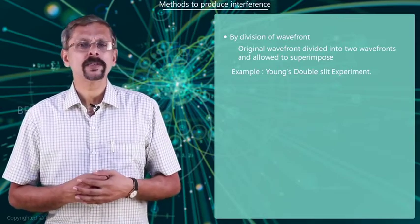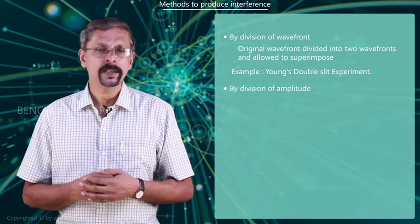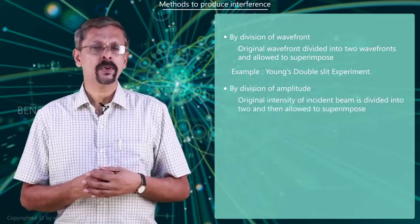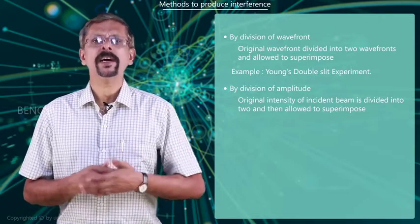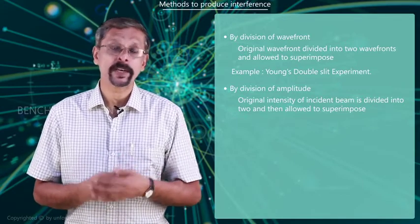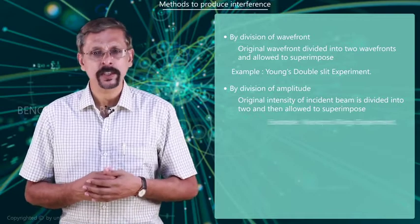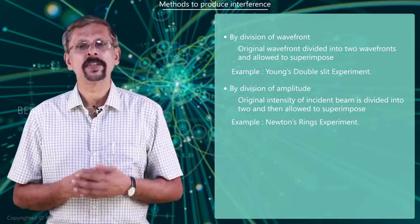The other method is known as interference by division of amplitude. In this method, the original intensity of the incident beam is divided into two and they are allowed to superimpose, leading to the interference pattern. The famous Newton's Rings experiment is done using this method.